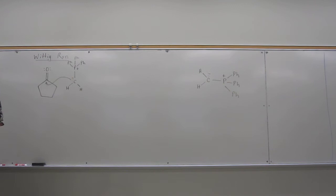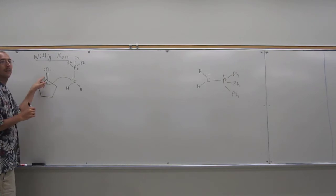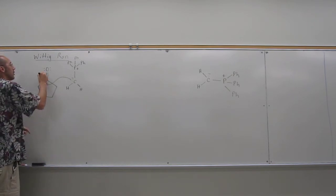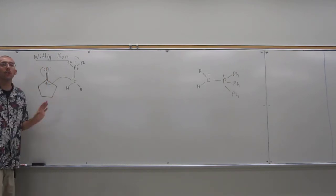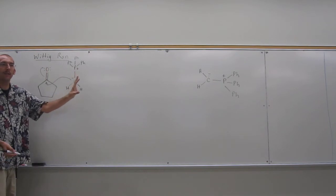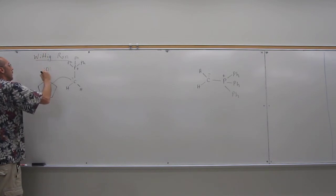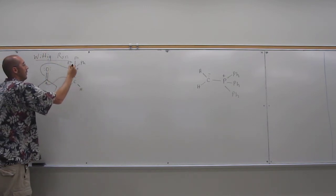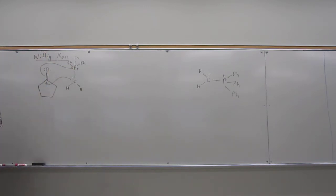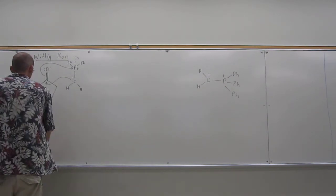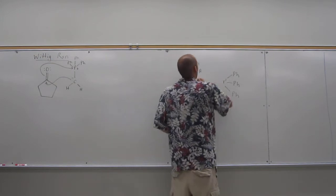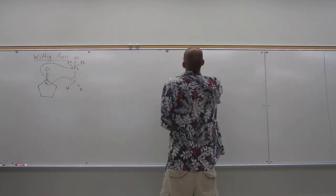But in actuality, what's going to happen is that's going to induce this double bond, of course, not only to just go up here. You can show that as an intermediate if you want. But what it really does is it goes all the way and attacks that phosphorus there. So you get this four-membered ring. An oxyphosphatane is what they're called.